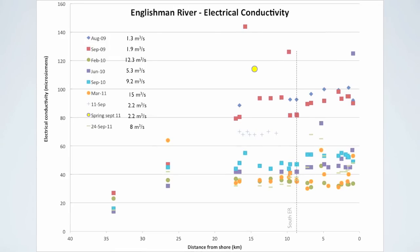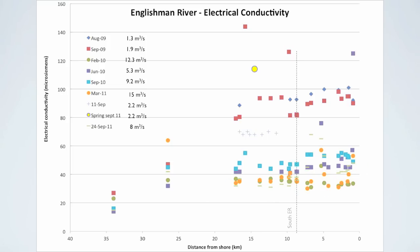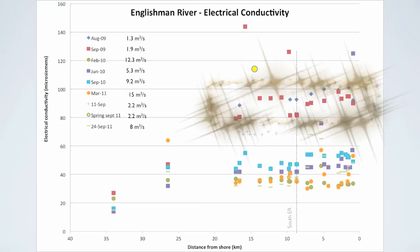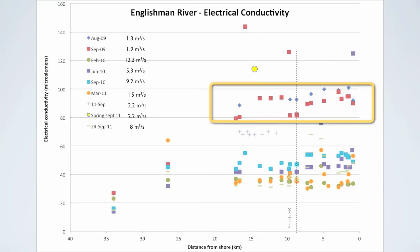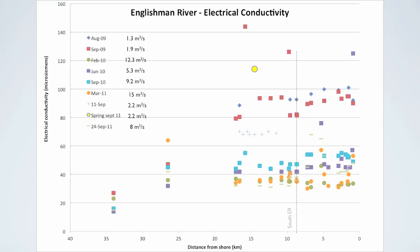Rainwater has a low electrical conductivity, typically less than 40 microsiemens. This is reflected by the low values measured in the winter when the river mostly consists of rainwater. In the summer and fall, the electrical conductivity is higher because the groundwater component is greater. This is clearly illustrated by the highest conductivity values between 80 and 100 microsiemens, measured when flows were the lowest at 1.3 and 1.9 cubic meters per second. The conductivity of the groundwater coming from the spring located at 14.5 km confirmed the higher conductivity of groundwater at around 115 microsiemens.